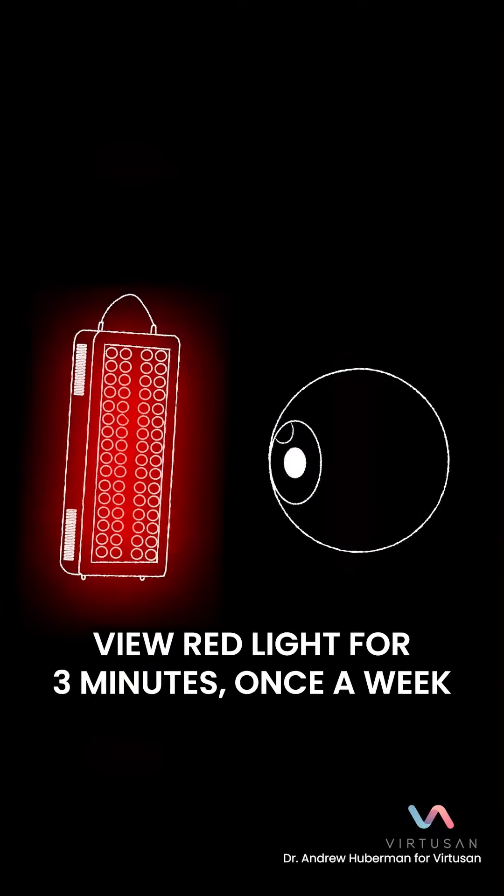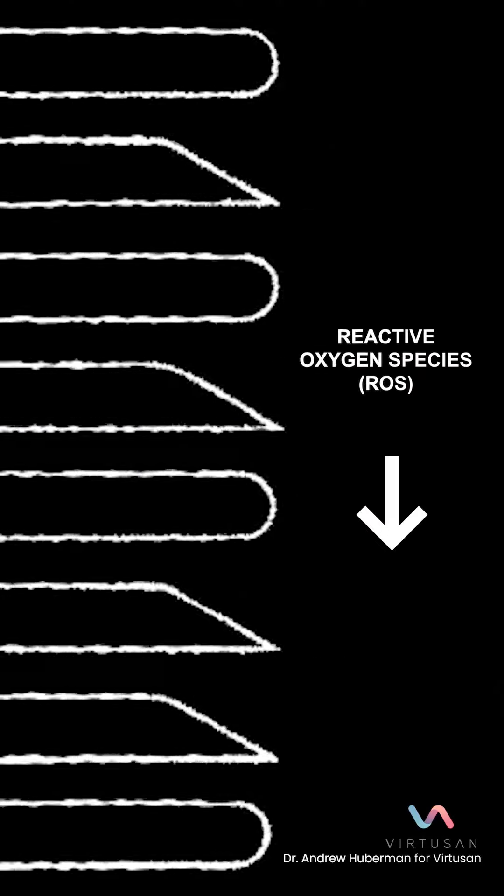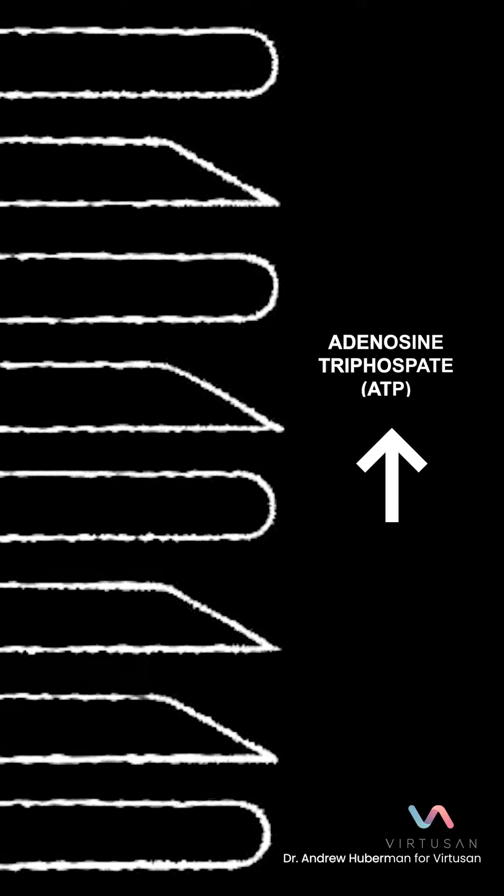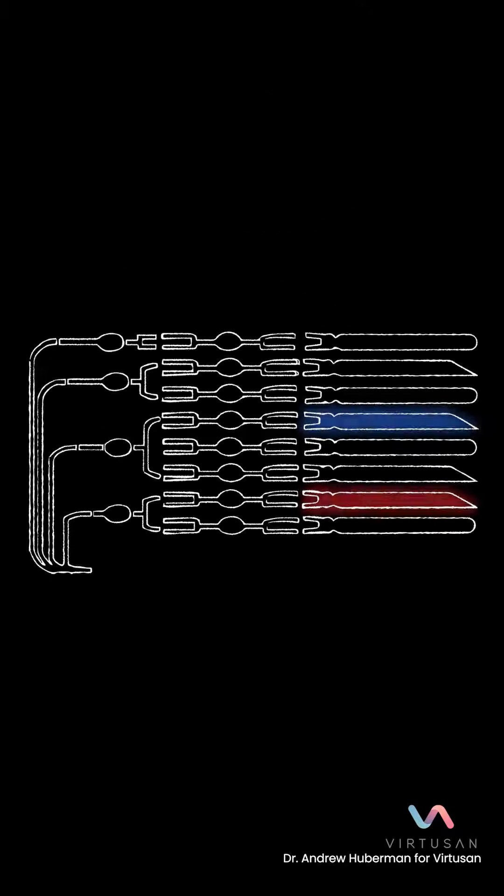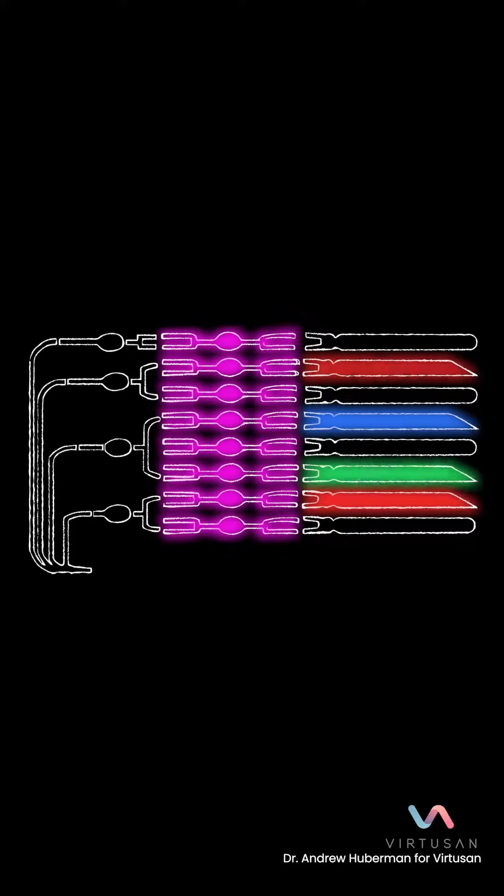It appears that red light viewing for three minutes a week at a particular time of day that I'll talk about in a moment allows a reduction in reactive oxygen species and improvement in ATP production and utilization. That, in turn, allows the photoreceptors to convert light information into electrical signals more readily that the other cells of the retina can understand.